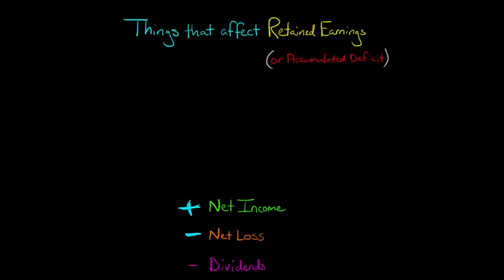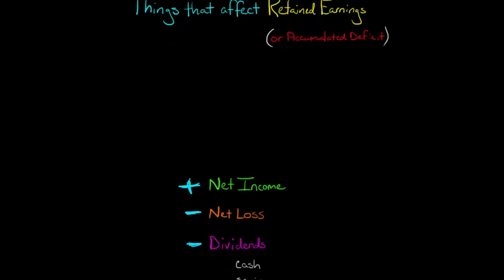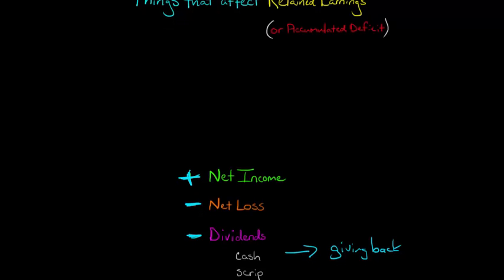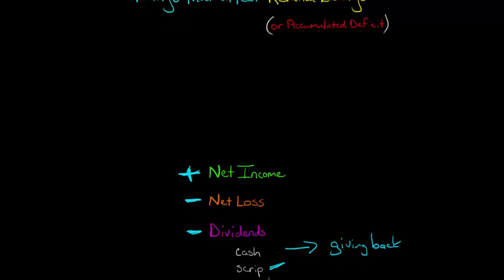Now, if the firm issues certain types of dividends, that is going to reduce the retained earnings account as well. For example, if the firm pays cash dividends to its shareholders, what it's doing is saying, we're not retaining earnings, we're giving them back. We're giving back earnings to our shareholders. In that case, the retained earnings account is going to go down. And it's also going to go down if you have strip dividends.